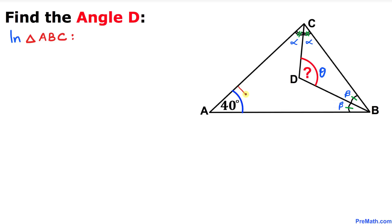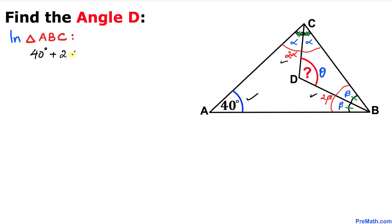We know that the sum of all three angles in triangle ABC must be equal to 180 degrees. Angle C is alpha plus alpha, which makes 2 alpha, and angle B is beta plus beta, which makes 2 beta. So the equation becomes: 40 degrees plus 2 alpha plus 2 beta equals 180 degrees.